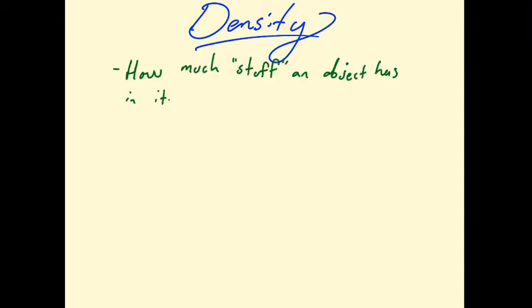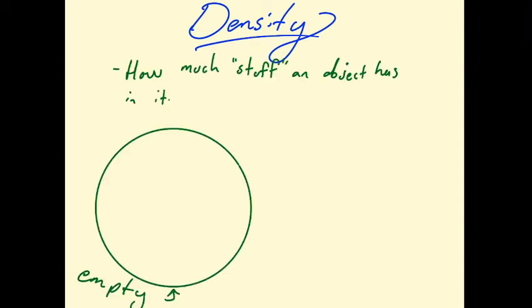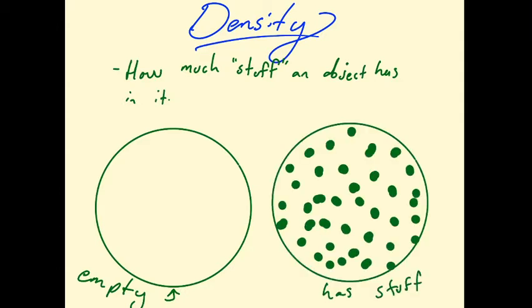This week we're talking about density, and really simply put, density is just how much stuff is in something. I'm going to draw two circles - they're the same size, right? So if two objects are the same size, the one that has more stuff in it has more density.